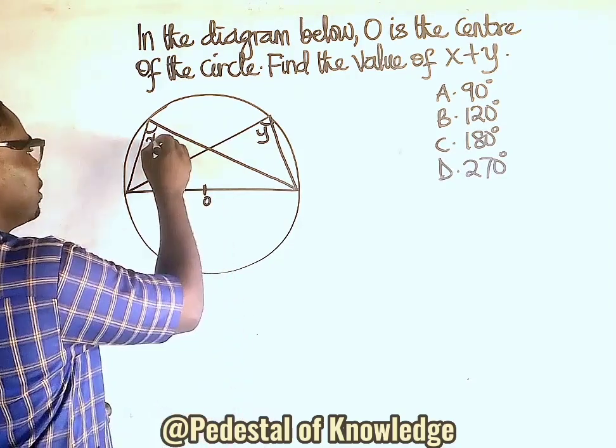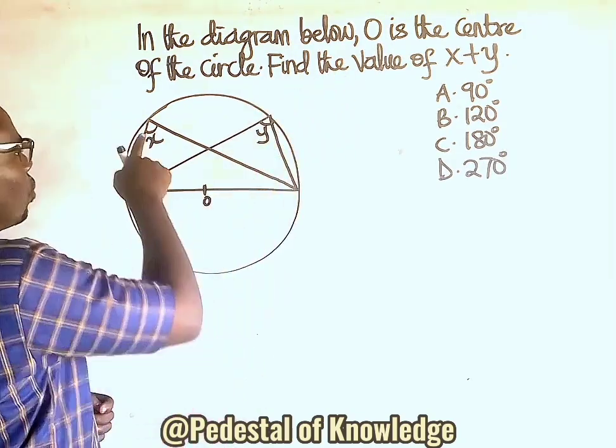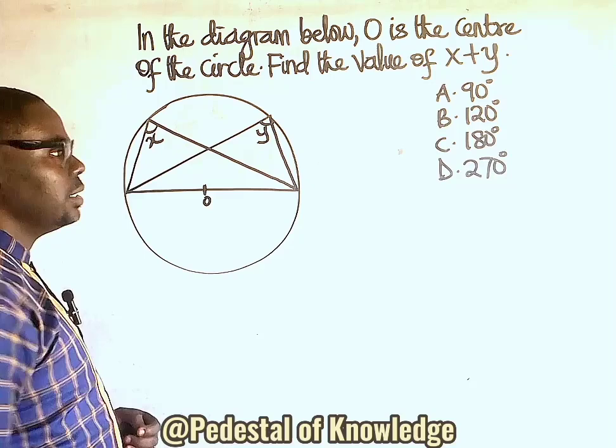So, that means that x is equal to 90 and y is equal to 90. Therefore, x plus y is equal to 90 plus 90 which is equal to 180 degrees.